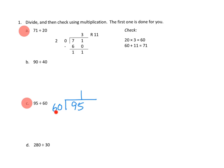So I think we might be only able to fit one group in there. If we had one group of 60, that would mean we've used up 60 of our 95 from our whole. Let's do that subtraction. So 5 minus 0 is 5, and 9 minus 6 is 3.